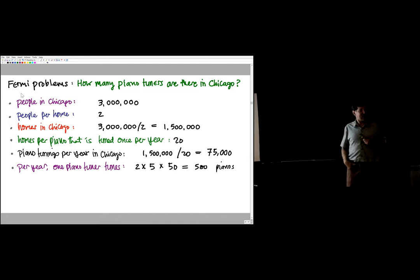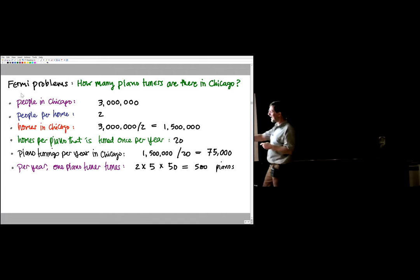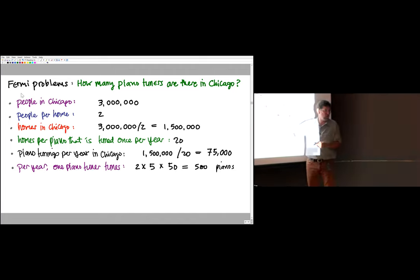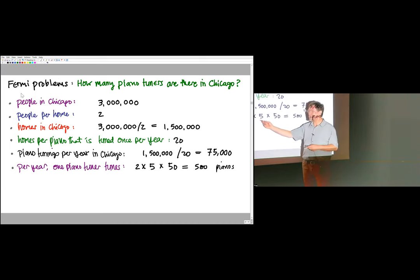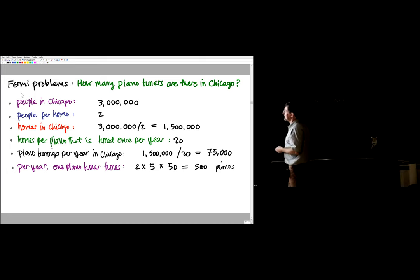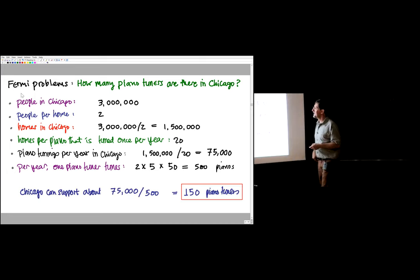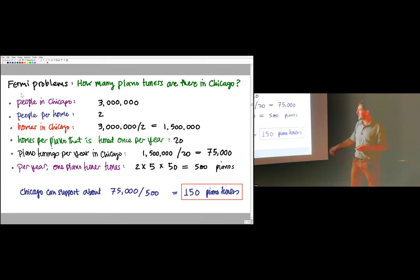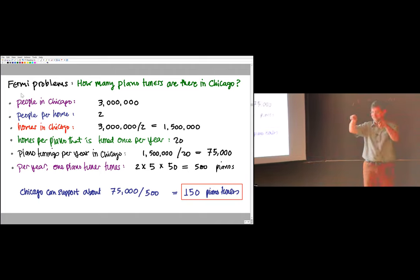So we can figure out that with one and a half million homes, one in 20 getting tuned once a year, we've got about 75,000 tunings per year. So I imagined I was a piano tuner. I'm going to work about 50 weeks a year. Maybe it's 40, maybe it's 60. It doesn't really matter. I work five days a week, not seven—I'm not a physicist. And I know that I really want to do more than two pianos a day. So that tells us that a piano tuner can do about 500 pianos a year. So I divide 75,000 by 500, and I get about 150 piano tuners.